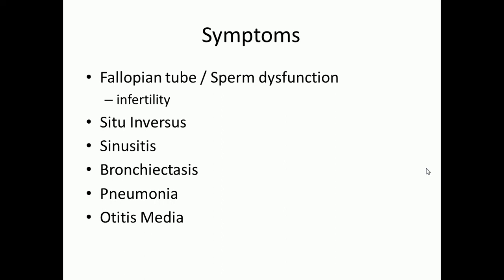In Kartagener syndrome, you also get sinusitis — an infection of your sinuses. This occurs because the cilia in your respiratory tract mucosal membranes are dysfunctional. You have an inability to keep mucus moving and to beat bacteria out of your sinuses. This leads to a buildup of mucus, bacteria growing within that mucus, and because it cannot move, it sits in your sinuses and causes recurrent infection.